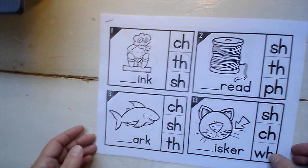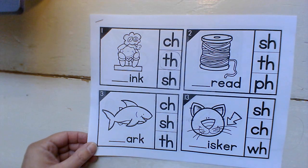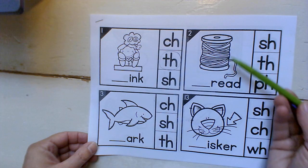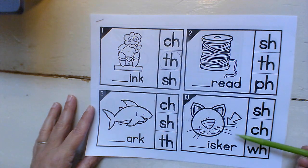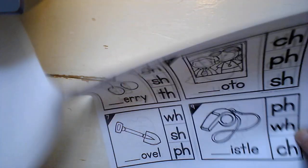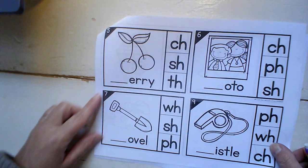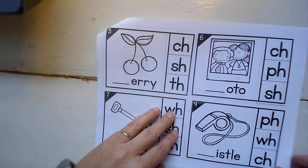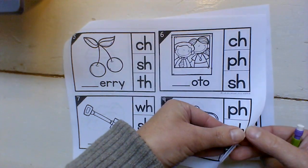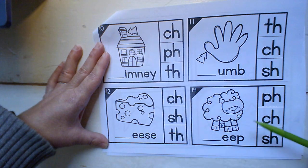Okay, so let's look at the picture so you'll know what they are and then you can go through and pick which sounds you need. This is thread - that's like a spool of thread. Shark - oh that shark looks better than the one I drew doesn't it. Whisker. Oh here's another one that I drew - cherry. Photo. Shovel. Whistle. Okay we'll keep going, let's see what's back here. Chimney. Chimney, that's pointing to the chimney. Thumb. Cheese. Sheep.